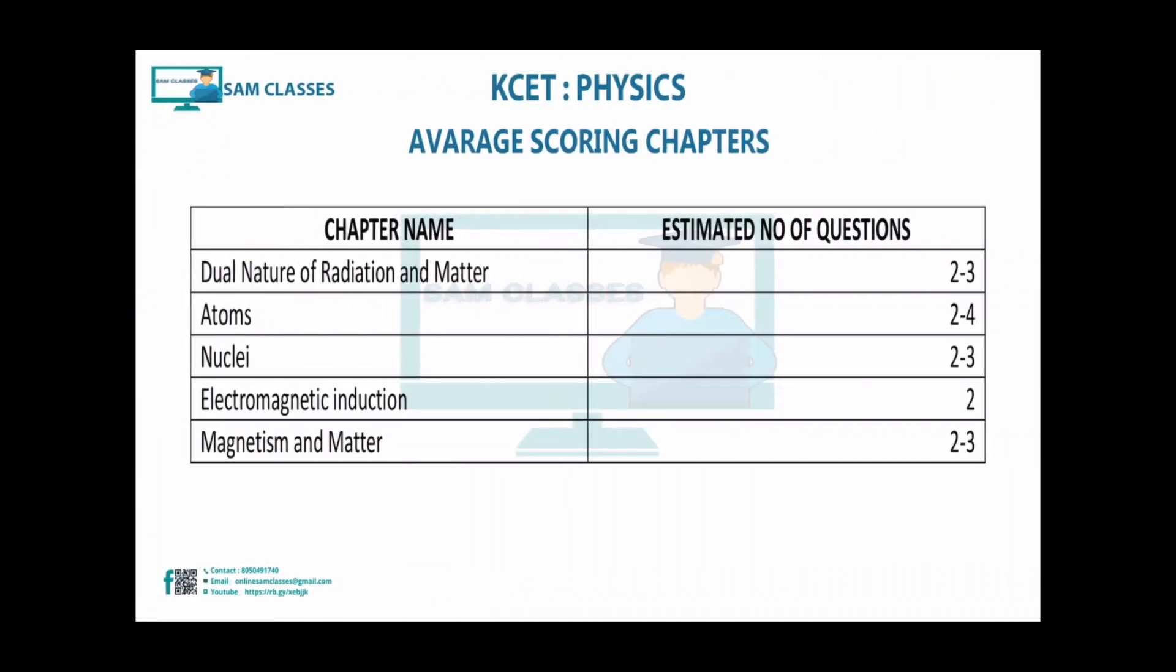Next are average scoring chapters, more on the numerical side. Dual Nature, Atoms, and Nuclei can be classified as modern physics - once you do this, it's very scoring with 2-3 or 2-4 marks each. Electromagnetic Induction around 2, Magnetism and Matter around 2. If you finish scoring plus average scoring topics, you'll easily score 42 to 48, crossing 45 plus.